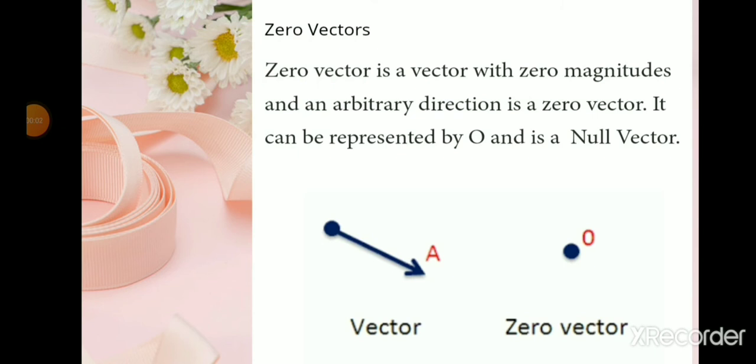Zero vectors. Zero vector is a vector with zero magnitude and an arbitrary direction. Zero vectors can be represented by bold zero or zero with an arrow above it. The zero vector is just represented by a point.